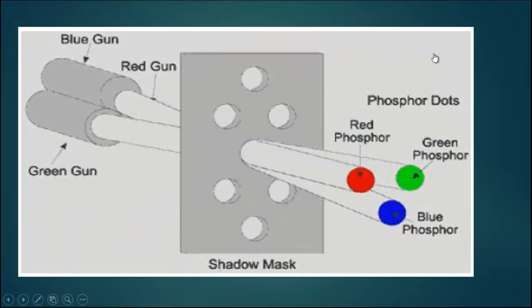This is the arrangement of shadow masking for color monitor. Each pixel with three dots of red, green and blue. These three dots are arranged in triangular format. This method is used in color CRT.